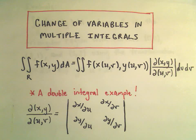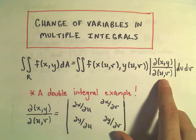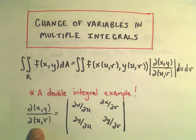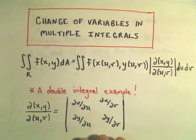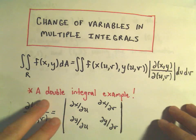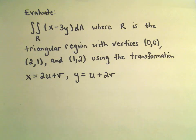In this video I'm going to do an example of using change of variables in multiple integrals — specifically a double integral example. This is the basic formula: we do a substitution and multiply by the absolute value of the Jacobian. The Jacobian is calculated by finding the determinant of a 2×2 matrix. We're going to evaluate the double integral of x minus 3y over a region R.